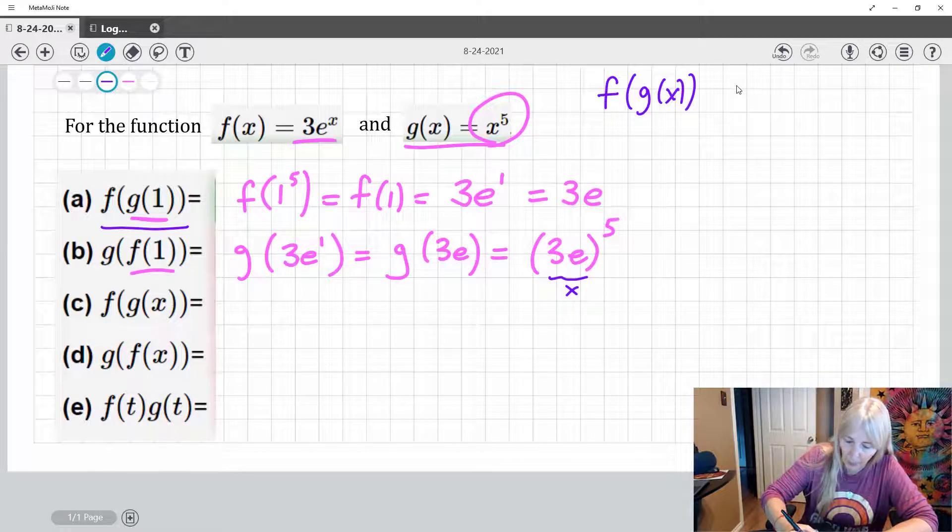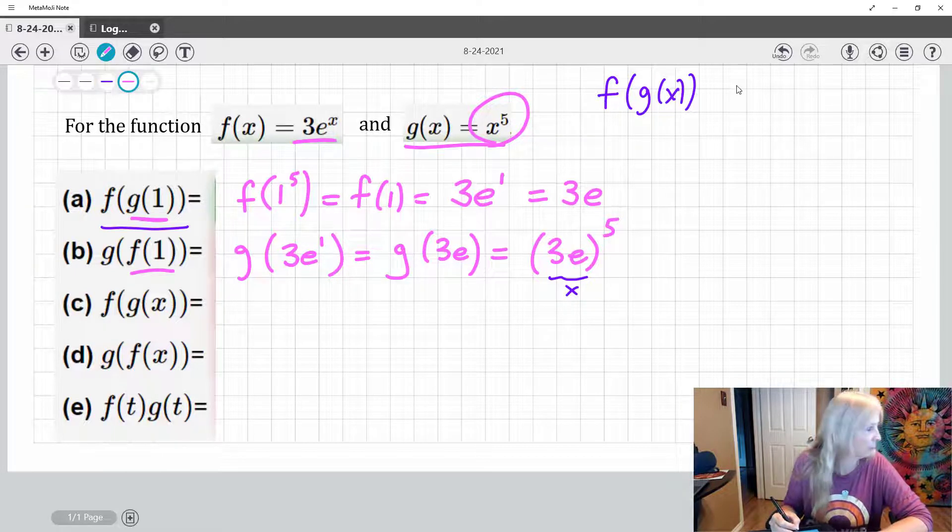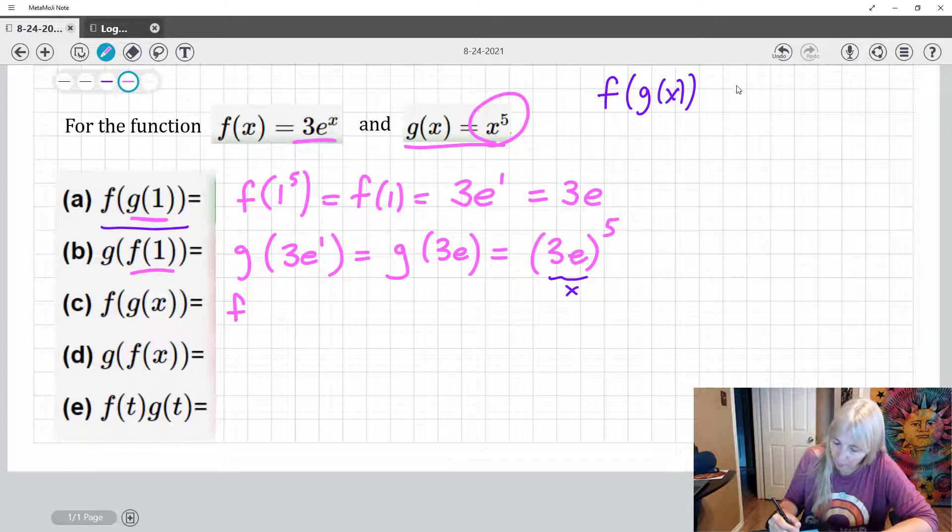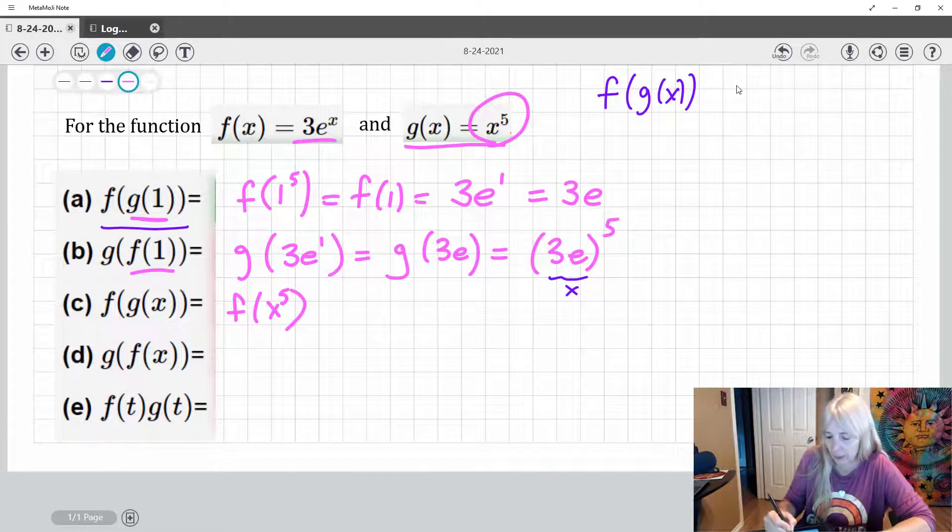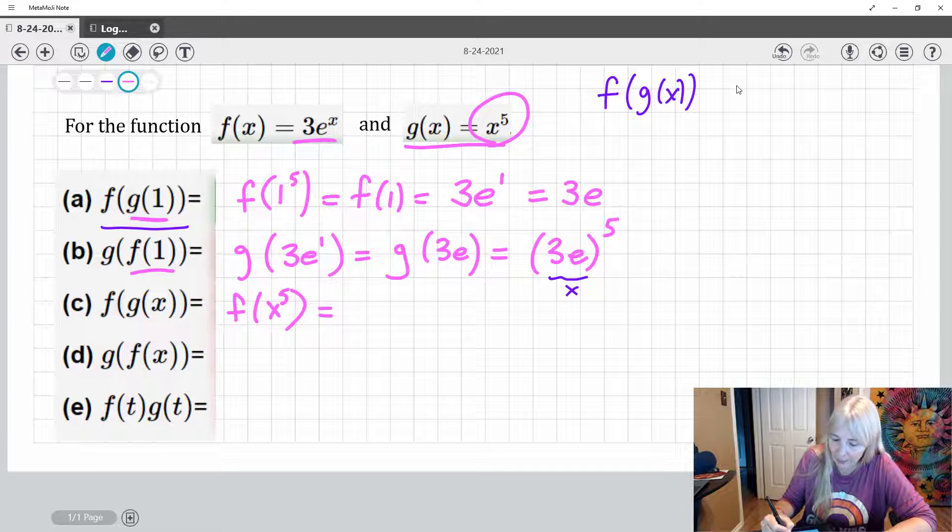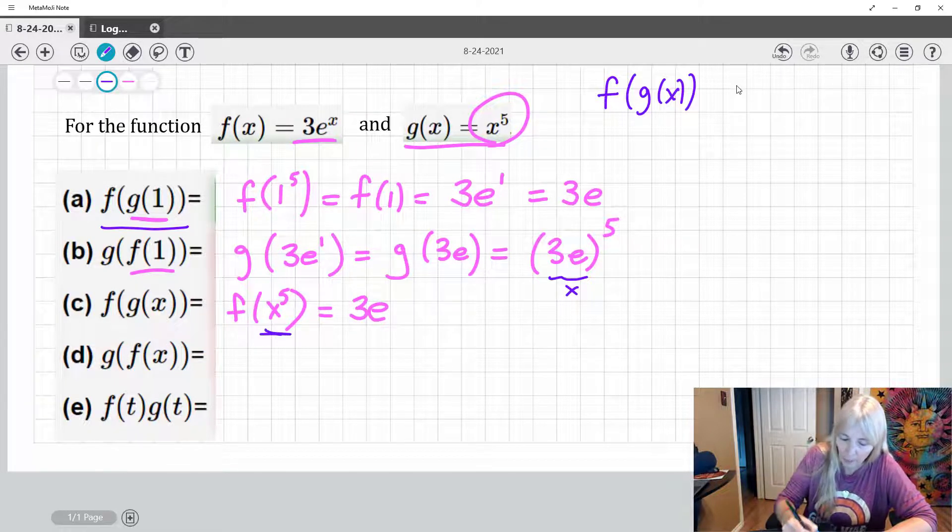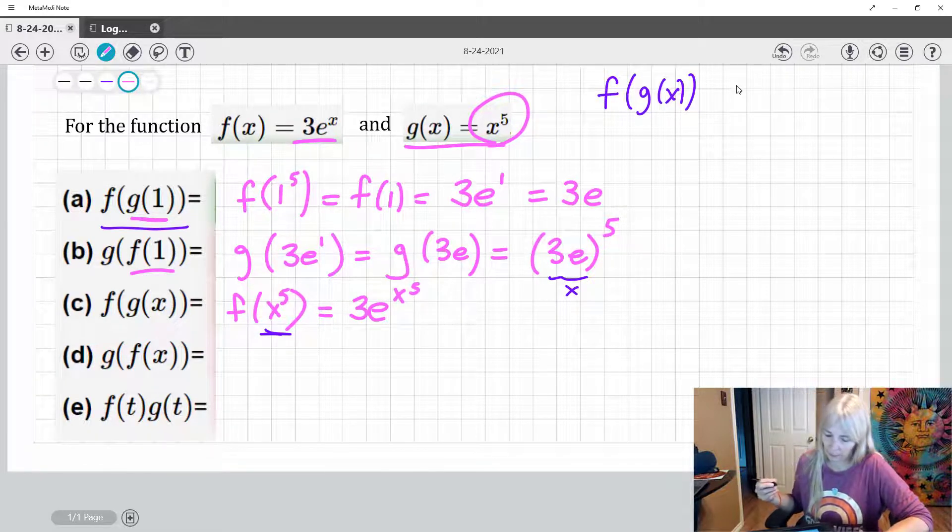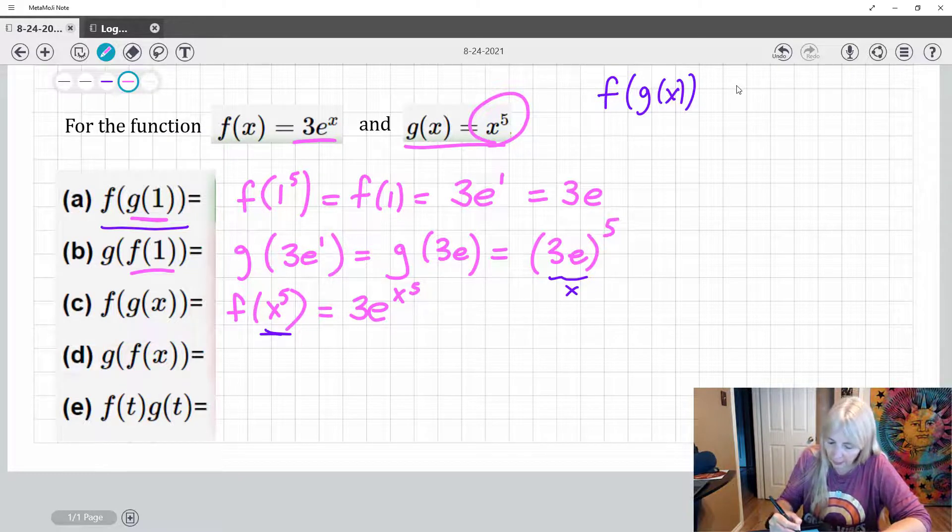Moving right along. So the next one may confuse you, but it's actually easier. That was Mickey. Hey Mickey, what's up? It's actually easier because it says for your g of x, where you see an x, plug in x. Hey, it's already an x. Sorry, I'm getting kind of squished on my writing here. And then the same thing on the other one.